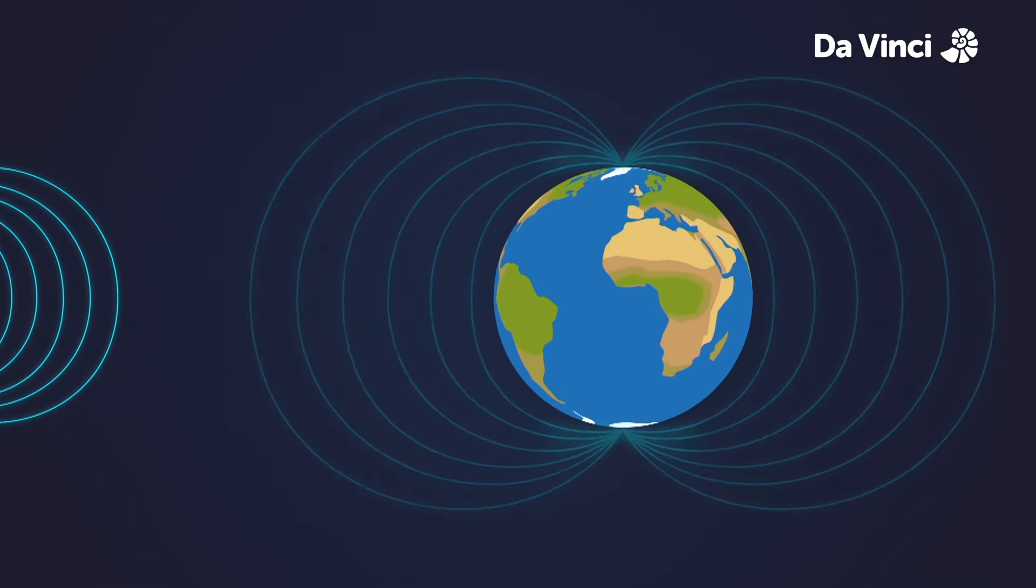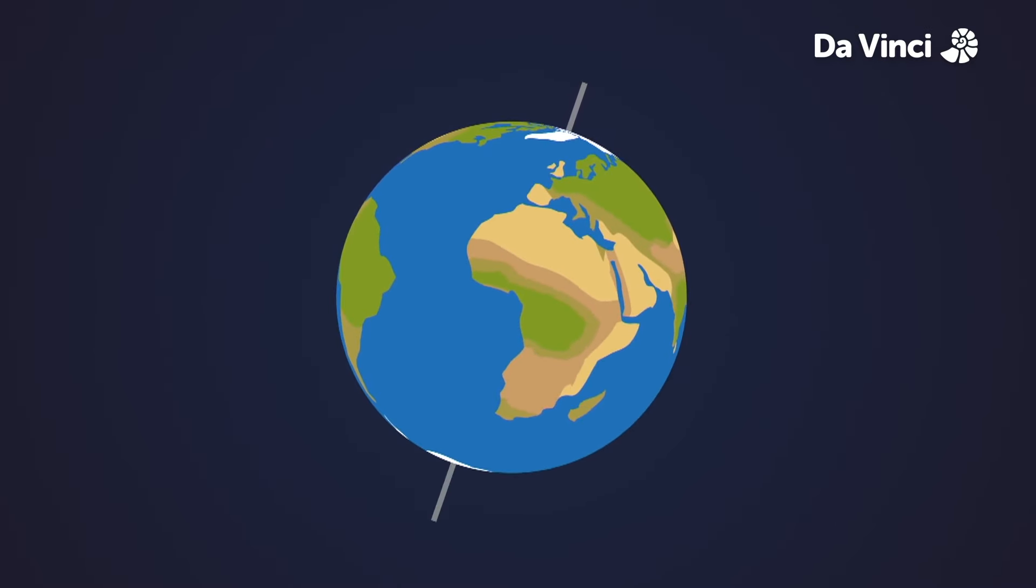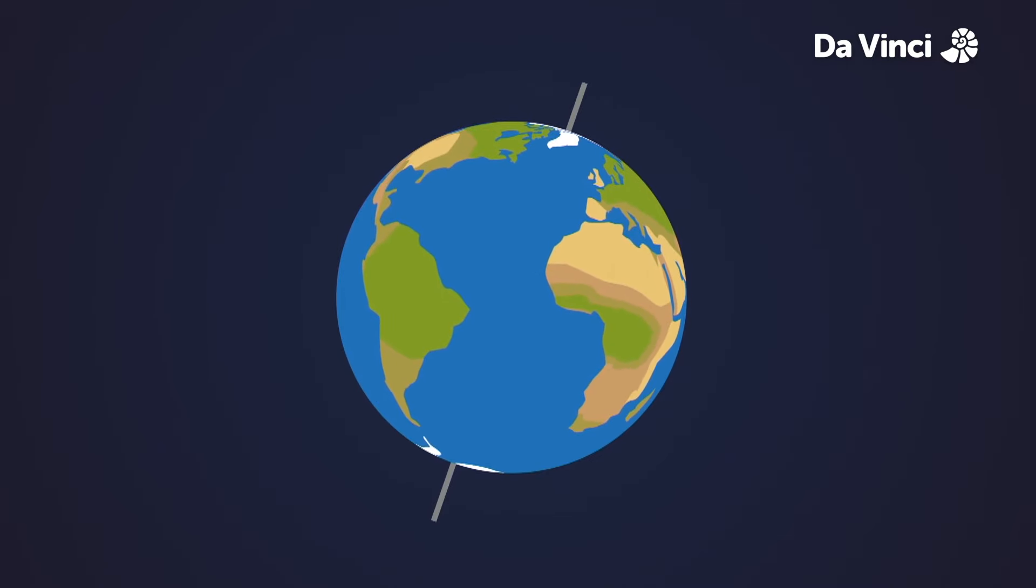But do not confuse the magnetic poles with the geographical poles. These are the ends of the Earth's rotational axis in the north and in the south.